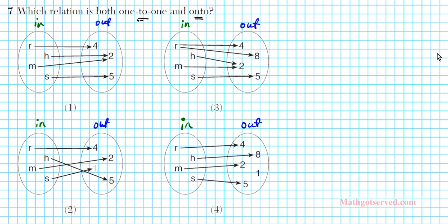Let's take a look at all these options and see which one is 1-to-1. What you're looking for as a violation of 1-to-1 is an input going to two outputs, or two inputs going to exactly one output. If you have a split arrow or a converging set of arrows, then you have a violation of the 1-to-1-ness of a relation. Looking at option 1: H and M both go to one output, so this is not 1-to-1 — you have 2-to-1 here. Two inputs converging to one output — that's not good.